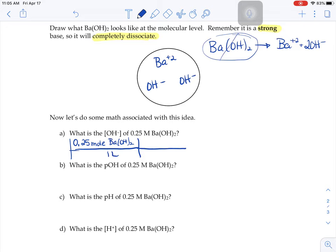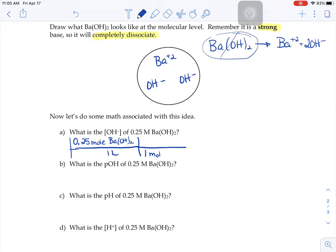Well, if we had a moles worth of barium hydroxide, we would get two moles worth of hydroxide ions.